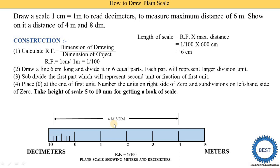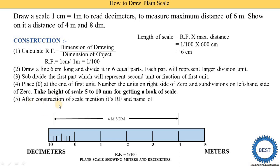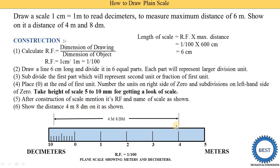Sometimes in a single problem, two indications are required. For example, if you need to indicate 3 meters and 2 decimeters, draw lines from 3 meters and count 2 decimeter subdivisions. Similarly, anything given — 3 meters 3 decimeters, or 2 meters 4 decimeters — can be simply drawn in the same way. After construction of the scale, mention its representative fraction and name of scale. We indicate the distance of 4 meters and 8 decimeters by drawing dimension lines.